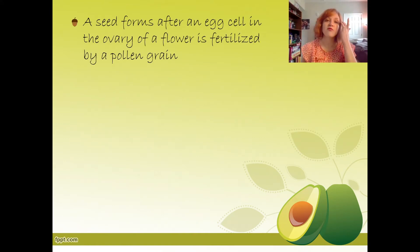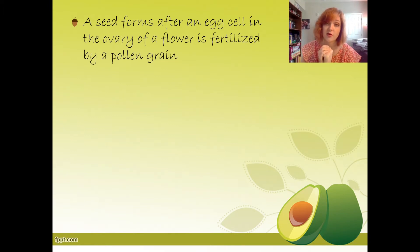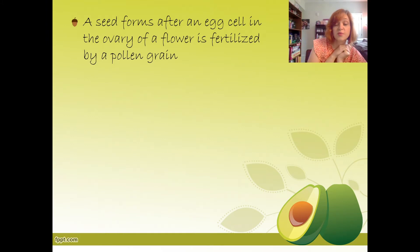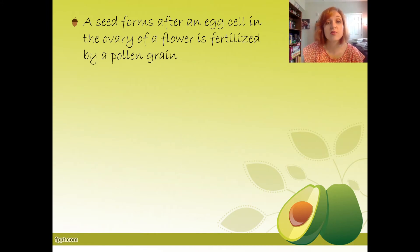A seed forms after an egg cell in the ovary of a flower is fertilized by a pollen grain. Quick review: pollen grains are found on the anther, which is the top of the male part of the flower — the stamen. Those pollen grains get blown towards the pistil, the female part of the plant, and get stuck on the top of the pistil, which is the stigma. The pollen grain then goes down the tube to the ovary where the eggs are, fertilizes an egg, and that is how we get a seed.